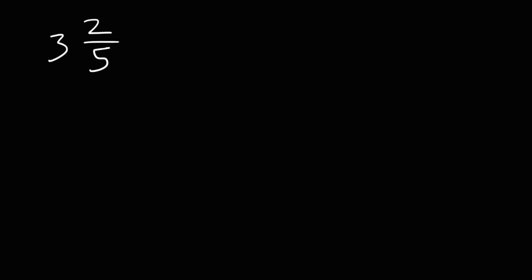Now what if you have a mixed number? Let's say 3 and 2 fifths. What is the reciprocal of that? The first thing you want to do is convert the mixed number into an improper fraction. First, rewrite the denominator of the fraction, which is 5. Next, multiply 3 times 5, and then add 2 to it.